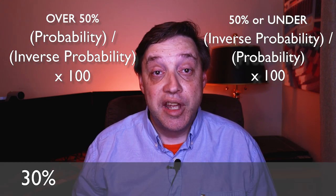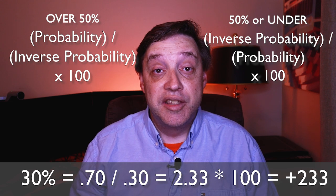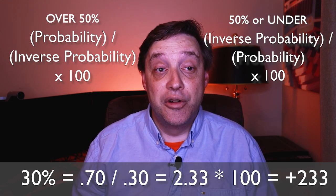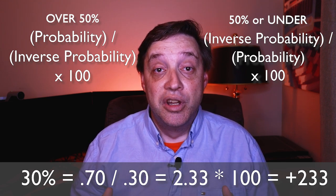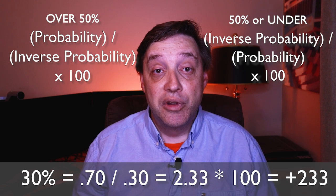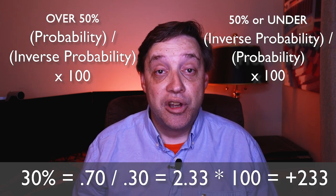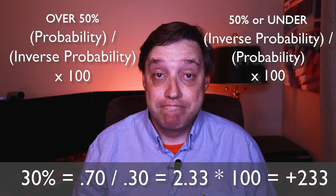And if under 50%, we take the inverse probability, divide that by the probability, and multiply that result by 100. For instance, 30% — that would be 70% divided by 30%, which equals 2.33. Multiply that by 100 and you get plus 233.